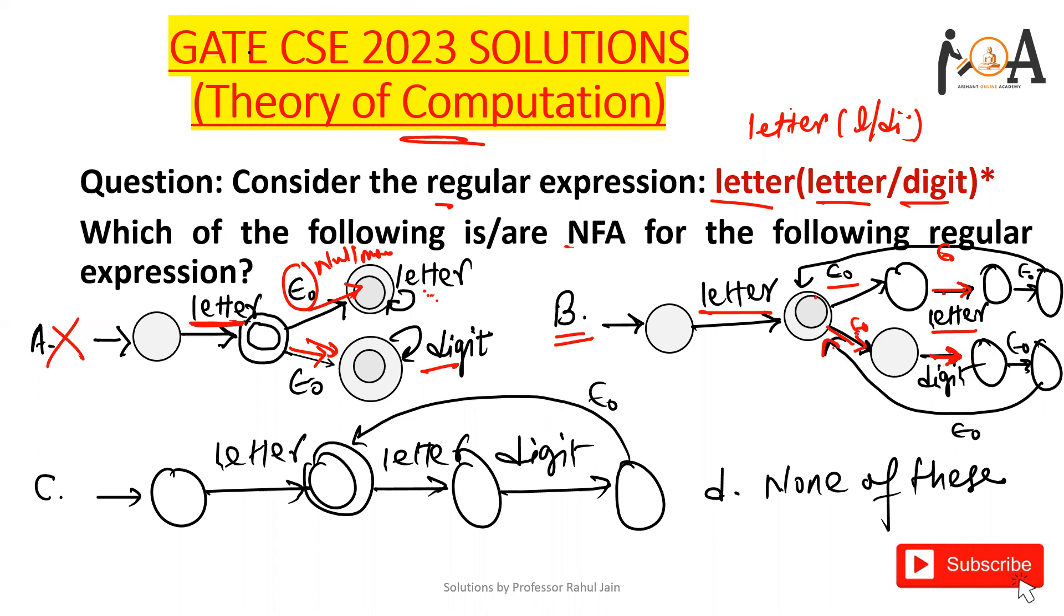All the possibilities after this letter - if you are going to take this letter, after that all the possibilities whether you want to take letter or digit, you can take it. And in NFA null moves are possible. So option B is the correct answer for it, because you can choose any letter and after that you can choose any combination of letter or digit as many times as you want.